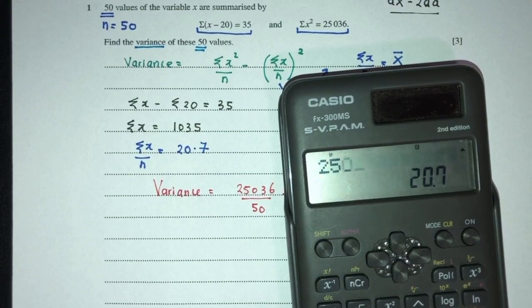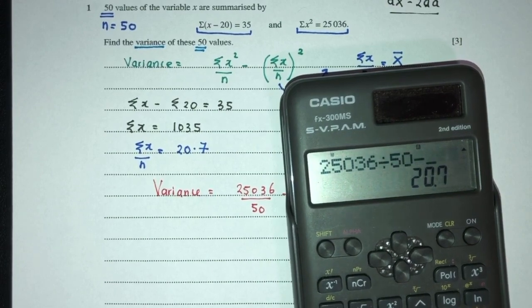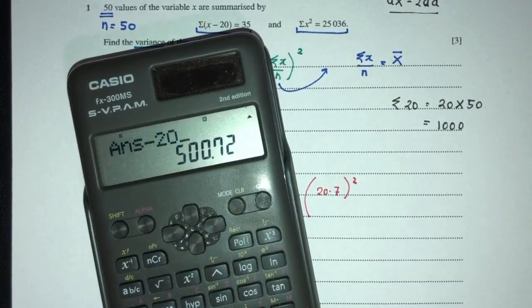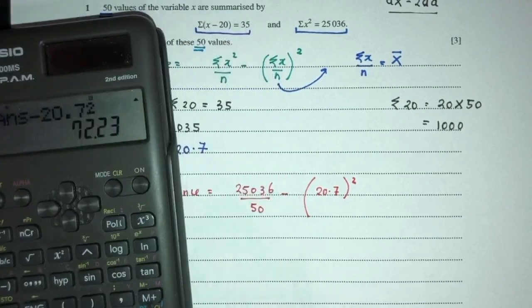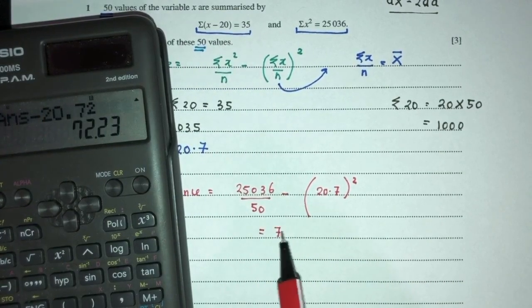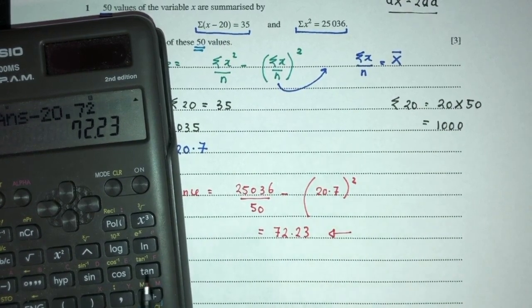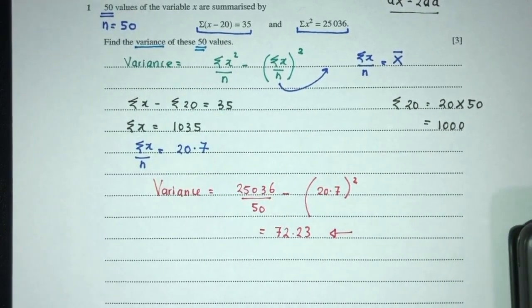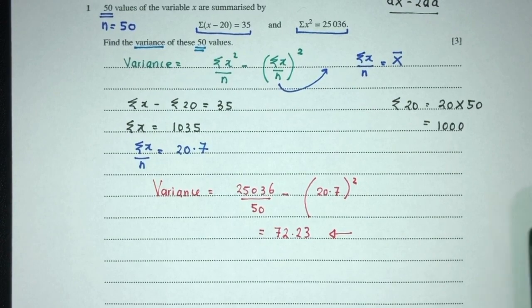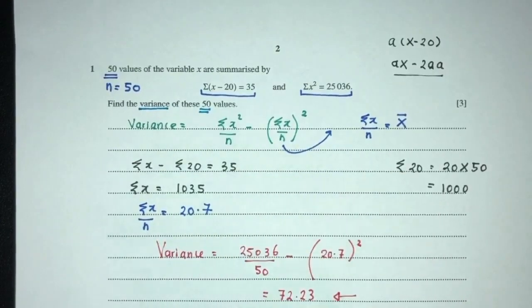So 25,036 divided by 50 minus 20.7 squared, that should be 72.23. This is the exact value, so you provide the exact value as your answer. And this is your question number one. As you can see, we have to know this formula here to solve the question.